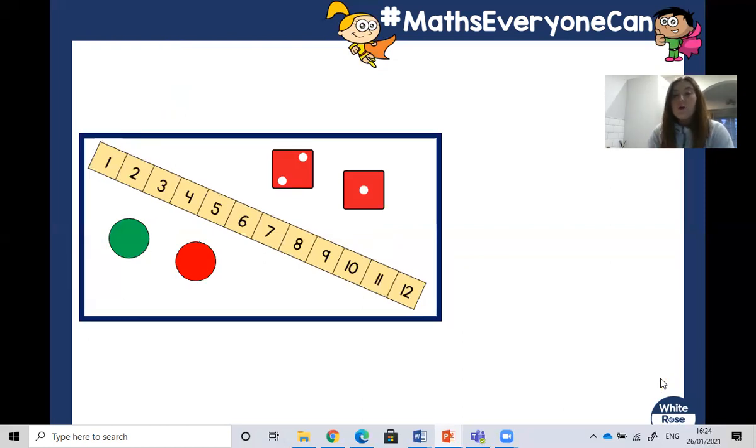So now it is your turn. You need to make a number track. You need two dice or even just one dice, but you could roll it twice. If you haven't got dice in the house, that's fine. Click on the link on the assignments page and you'll be able to find an interactive dice to use.